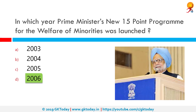In which year was the Prime Minister's New 15-Point Program for the Welfare of Minorities launched? The correct answer is 2006. This program was launched by the Indian government in 2006 for the welfare of religious minorities, in furtherance of reports by committees such as the Sachar Committee report, which highlighted that minorities — especially Muslims — were often in a worse socioeconomic and political condition than Scheduled Castes and Scheduled Tribes communities.